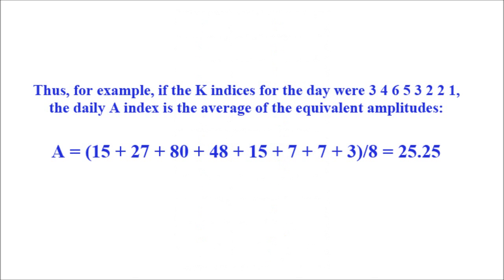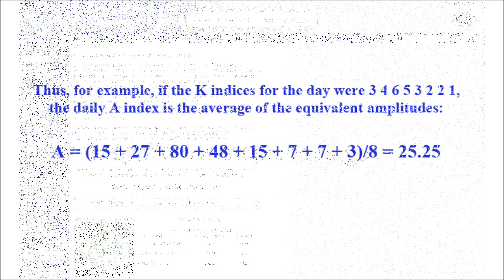Now here's some math. If we take the K indexes for the day, the daily A index is the average of the equivalent amplitudes. For example: K=3 equals 15, K=4 equals 27, K=6 equals 80, K=5 equals 48, and so on. We take these numbers and add them together, divide by 8, and we end up with 25.25 — which gives us our A index for the day.